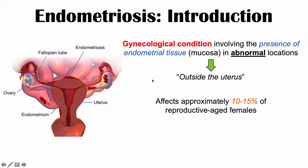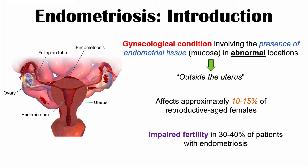This condition affects approximately 10 to 15% of reproductive-aged females, so it affects a good portion of individuals and has a lot of consequences, including many symptoms we'll talk about. It also affects fertility, causing impaired fertility in about 30 to 40% of patients with this condition — a significant impact both in terms of signs and symptoms and complications.